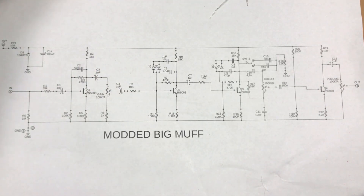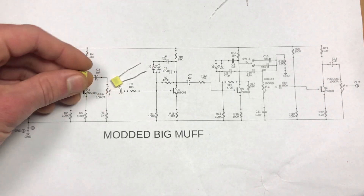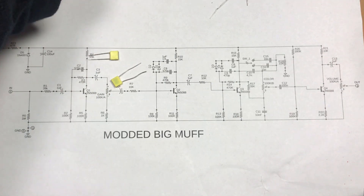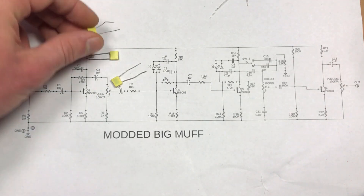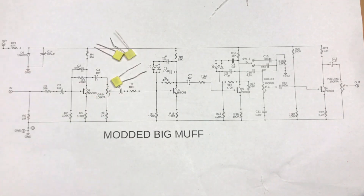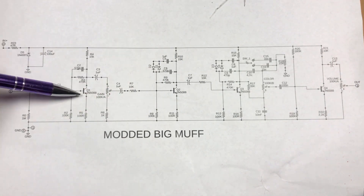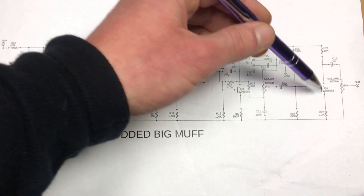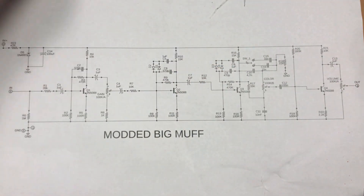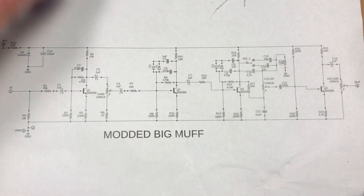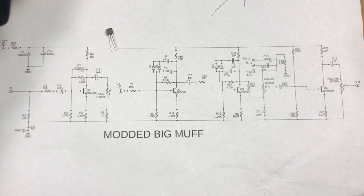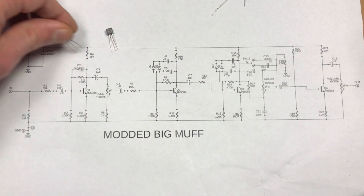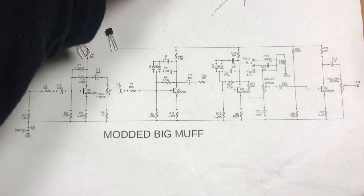Those symbols are used for all other non-polarized capacitors. They look like this. Here you can see NPN-BJT transistor symbol. I also mentioned them in my previous video, so be sure to check it.